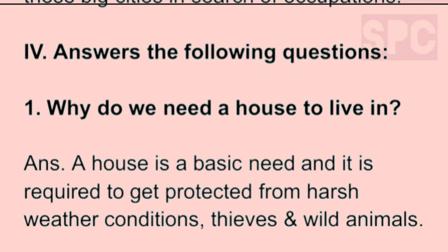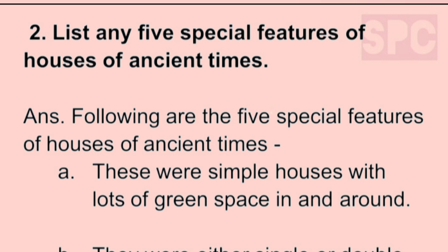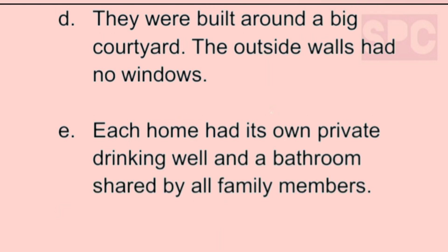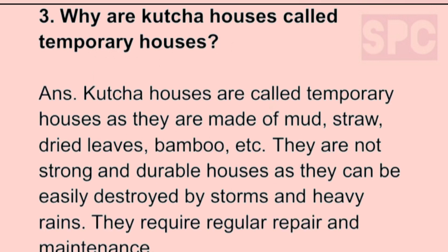Question 2: List any 5 special features of houses of ancient times. Answer: (a) these were simple houses with lots of green space in and around; (b) they were single or double storied, made with baked bricks plastered with mud or clay; (c) they had high roofs to keep them cool; (d) they were built around a big courtyard and the outside walls had no windows; (e) each home had its own private drinking well and a bathroom shared by all family members.